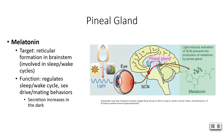Your pineal gland, up in your brain opposite your hypothalamus and pituitary, secretes melatonin. Melatonin targets your reticular formation in your nervous system and brain stem specifically, and is involved in your sleep-wake cycle. Melatonin also helps regulate your sex drive and mating behaviors. Secretion of melatonin increases in the dark, which coincidentally is when we tend to go to sleep.